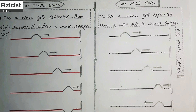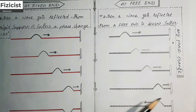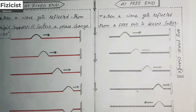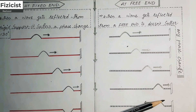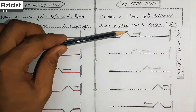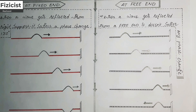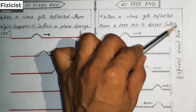Now let's talk about the reflection of a wave from a free end. When a wave continuously travels towards the free end and strikes it, it does not suffer any phase change. Since the support itself is free to move, it is not able to exert any force on the rope, so the wave does not flip down. As you can see, a crest travelling towards the free end reflects back as the same crest. When a wave gets reflected from a free end, it does not suffer any phase change.